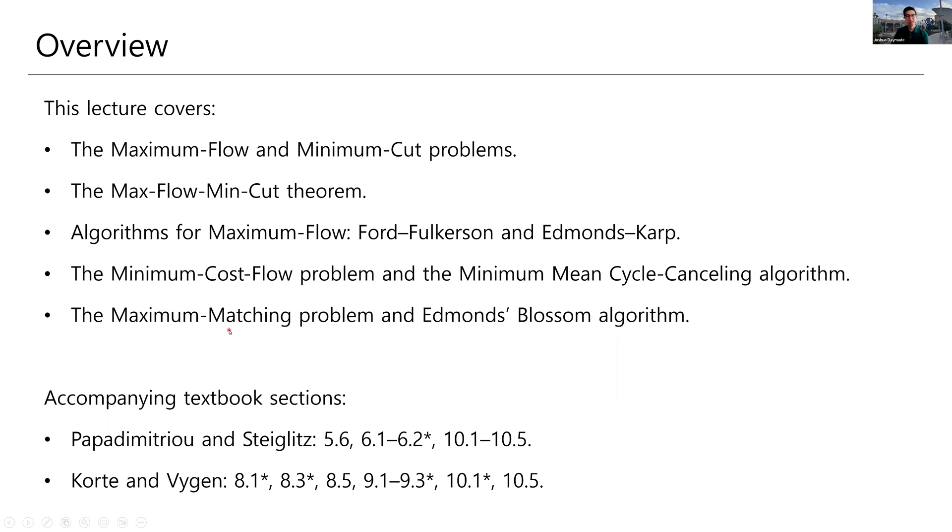The last problem that we will look at is maximum matching. This is actually something that we talked briefly about in Unit 0, Lecture 0 of this class. We looked at perfect matchings. Here we'll look at the more general version, where we're just trying to find matchings as large as possible. Once again, we will do some theory, specifically some graph theory, to determine when we can improve our matchings. And then we will use that theory in Edmonds' Blossom algorithm, which is a general purpose algorithm for finding maximum matchings in graphs.